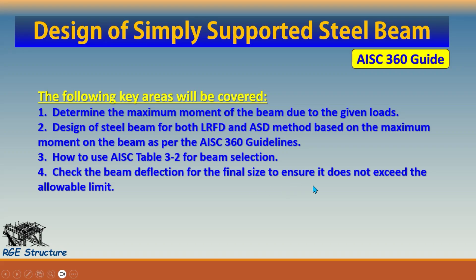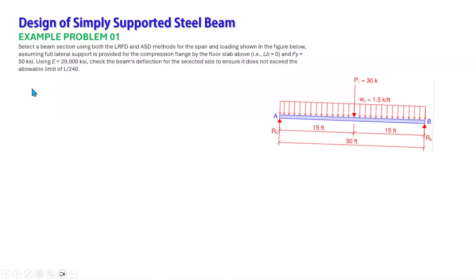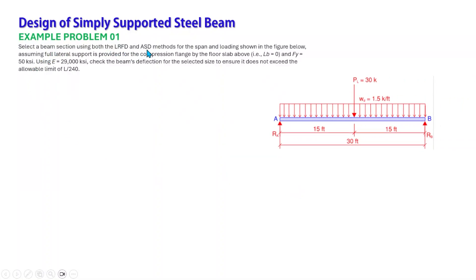Let's dive into the problem: select a beam section using both the LRFD and ASD methods for the span and loading shown in the figure. Full lateral support is provided for the compression flange by the floor slab above, so LB equals zero. The yield strength of steel is 50 ksi, and the elastic modulus of elasticity is 29,000 ksi. Check the beam's deflection for the selected size to ensure it does not exceed the allowable limit of L over 240.